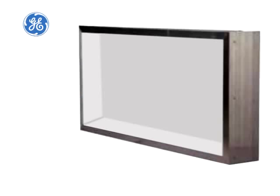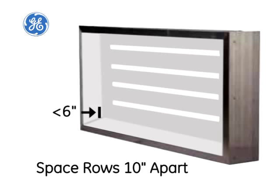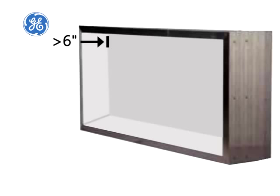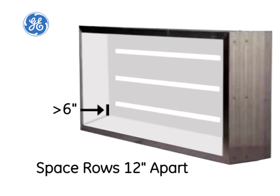Start by determining the row spacing for your layout. If your Tetra Powerstrip DS modules will be less than six inches from the sign face, space your rows ten inches apart. If your tubes will be six inches or more from the face, space your rows twelve inches apart.